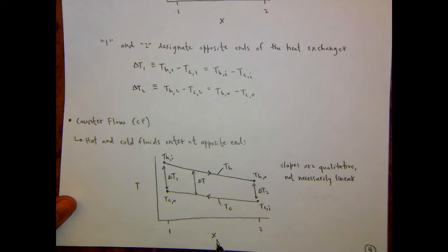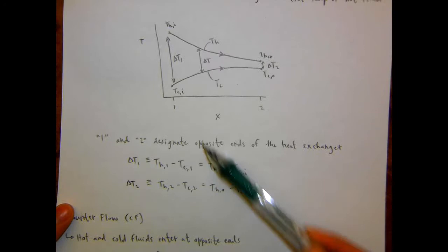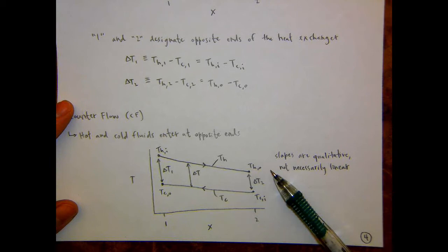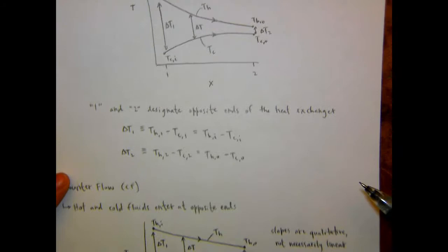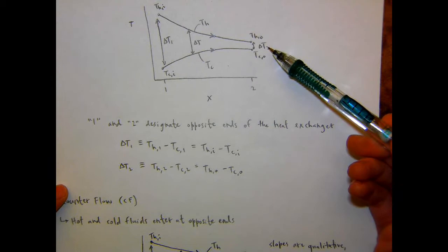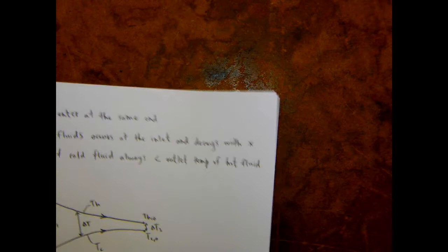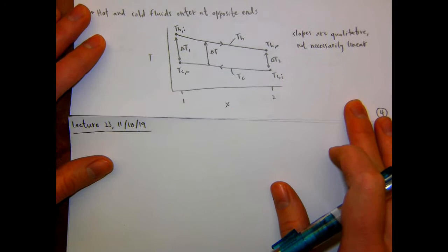This is the temperature as a function of X qualitative diagram for a counter flow heat exchanger. The inlet of the hot fluid is exchanging heat with the outlet of the cold fluid, and vice versa on the other end. So delta T1 is THI minus TCO, as opposed to the parallel case where it was THI minus TCI. And then delta T2 is the hot outlet minus the cold inlet. That's our picture for the counter flow case.